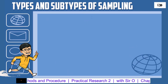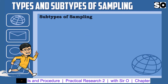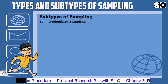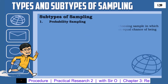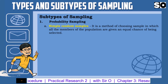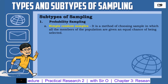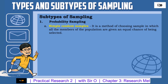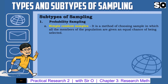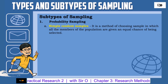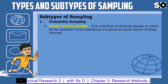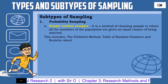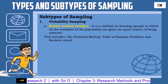Subtypes of Sampling — Probability Sampling. Number 1: Simple Random Samples — a method of choosing a sample in which all the members of the population are given an equal chance of being selected. This includes the fishbowl method, table of random numbers, and the roulette wheel.